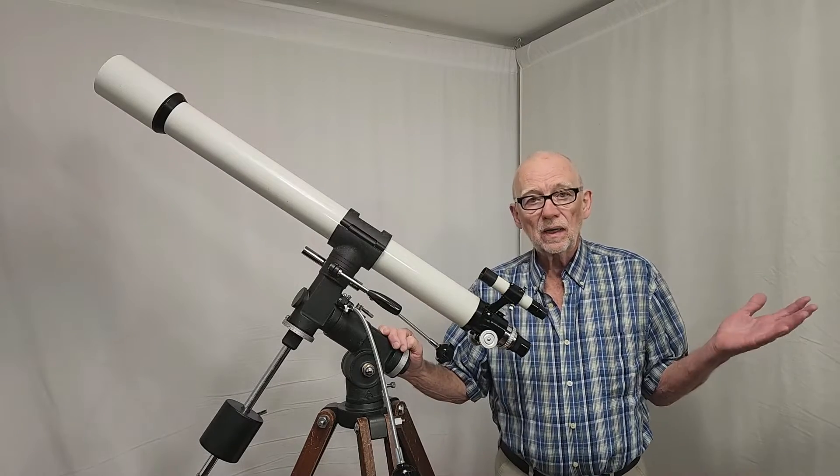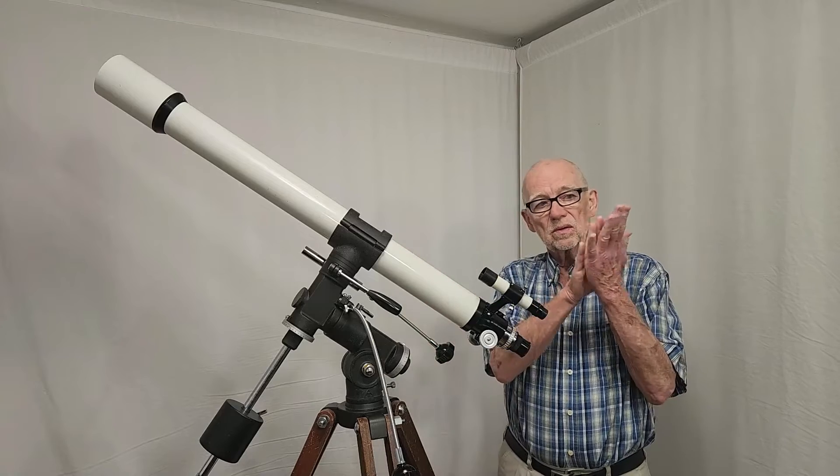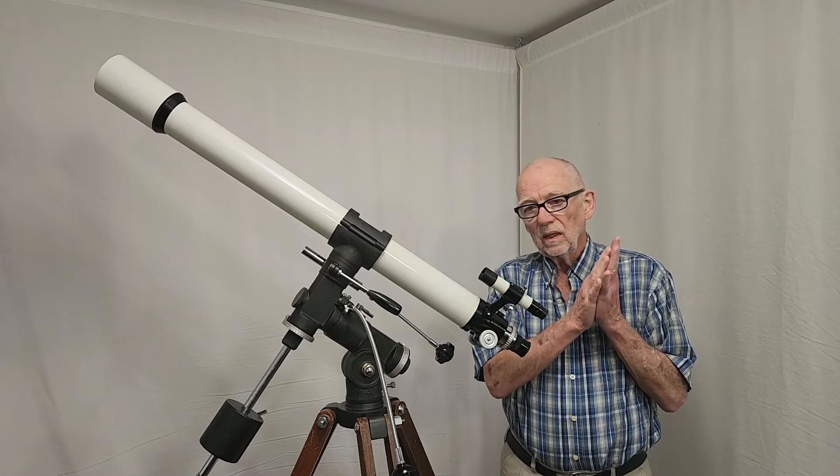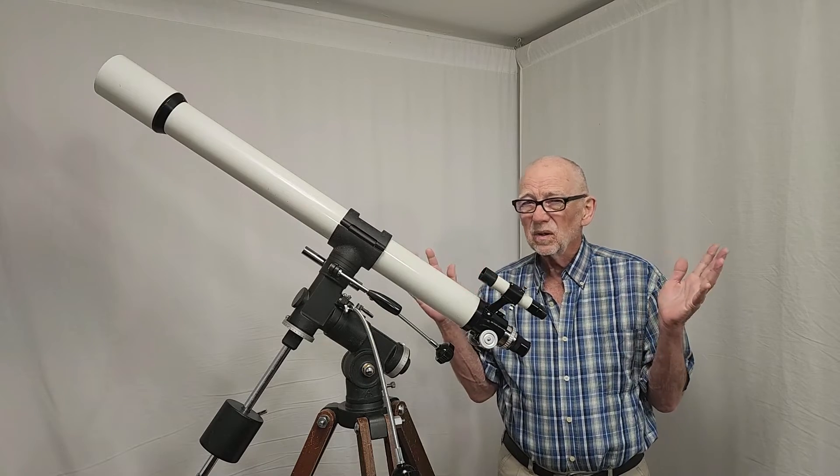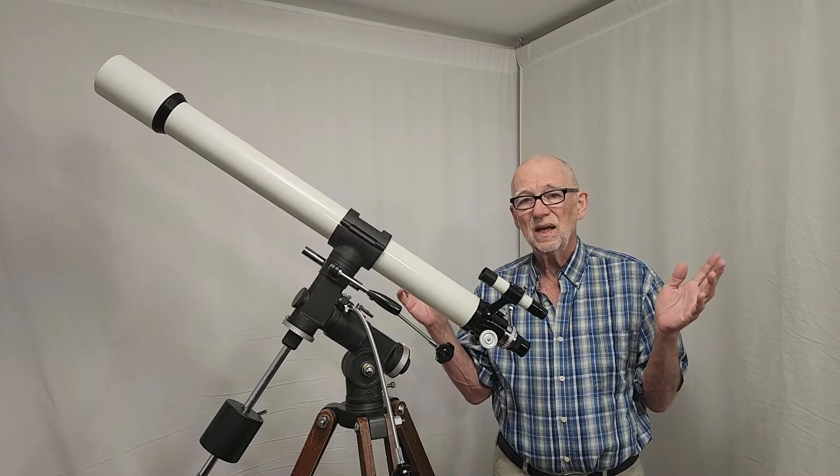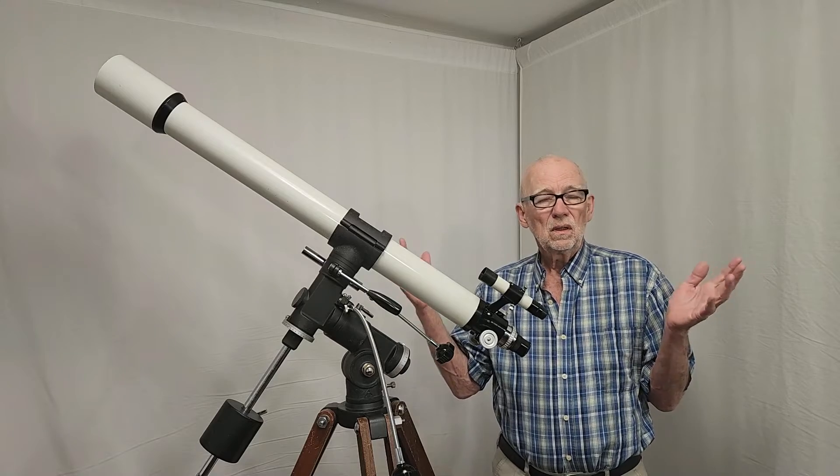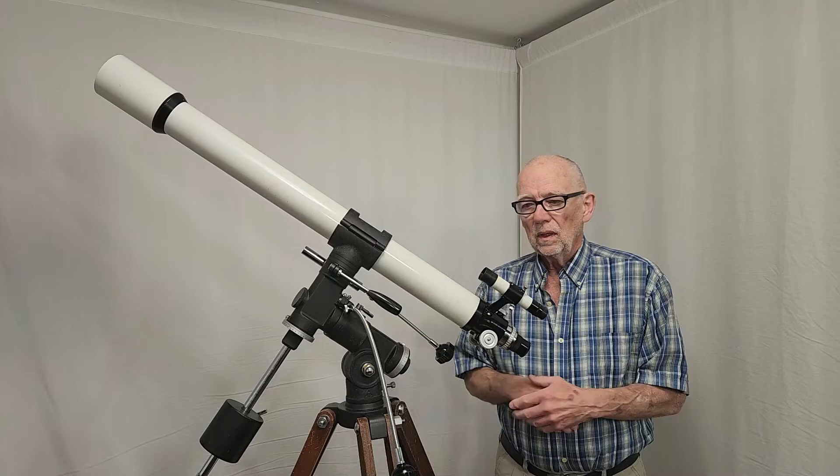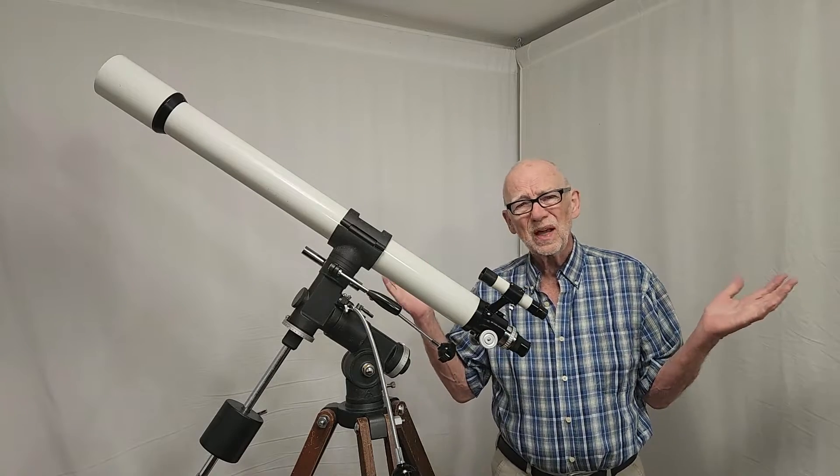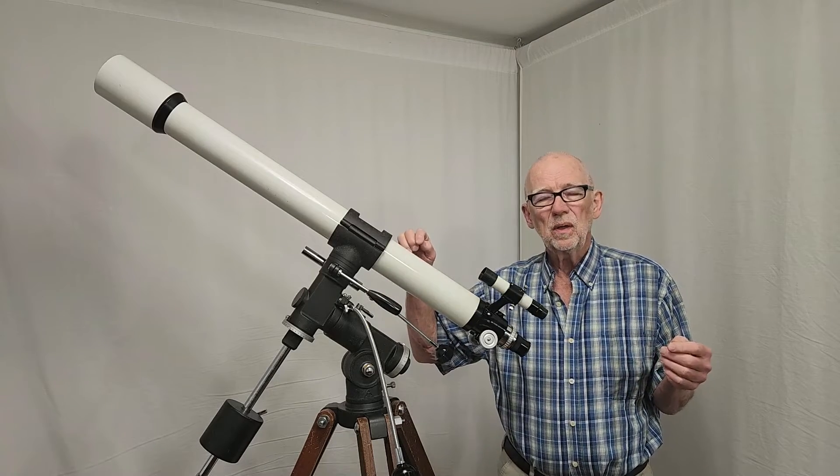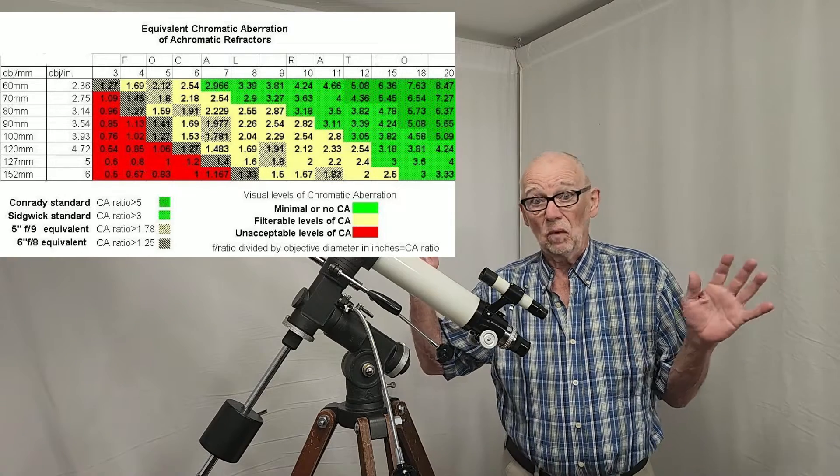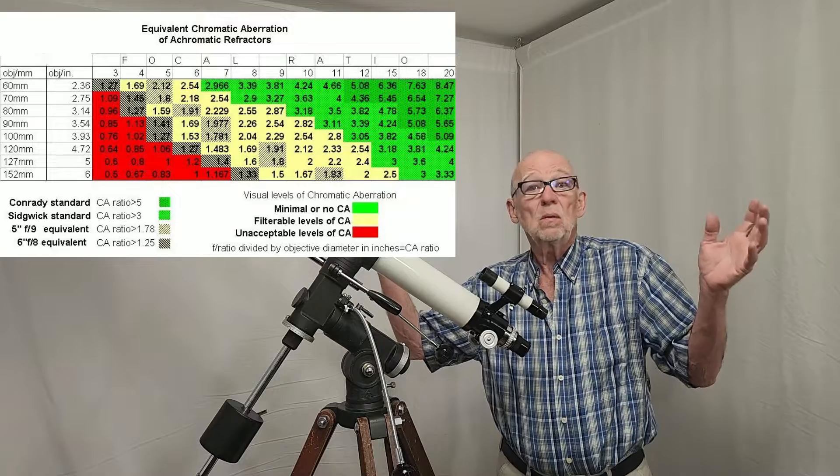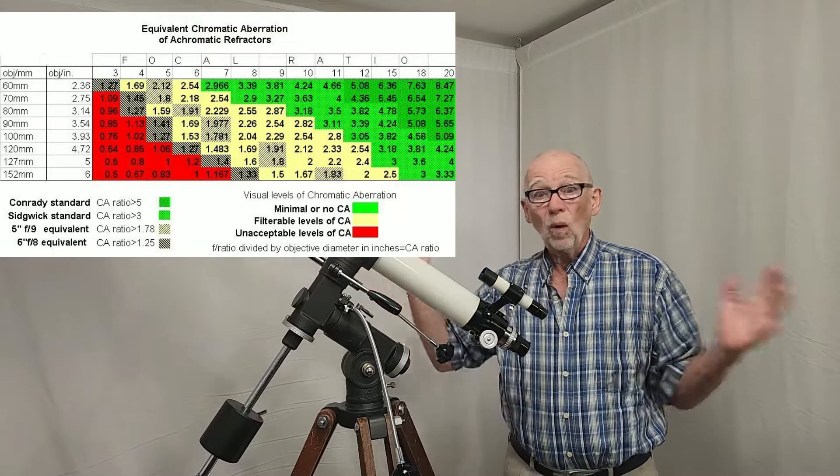Well, an apochromat means that three colors come together at the focal plane, and so that's well defined. A semi-apochromat is not well defined. Takahashi says that it has one-third the chromatic aberration of a regular achromat. Now why would you do that? This is about an F-15 telescope. It's already got 65 millimeters and F-15 has almost zero color anyway. Why would you do that?